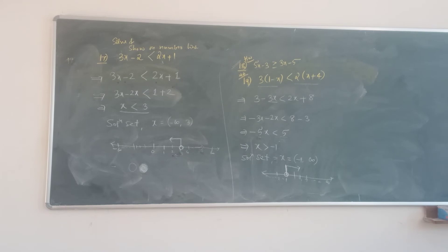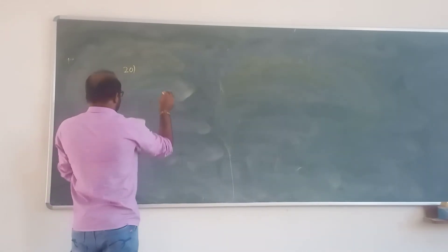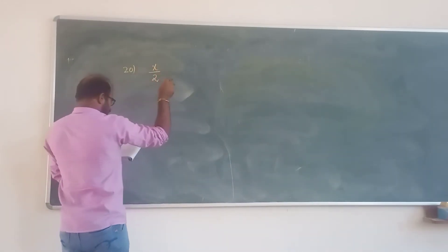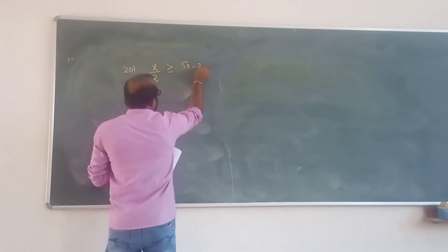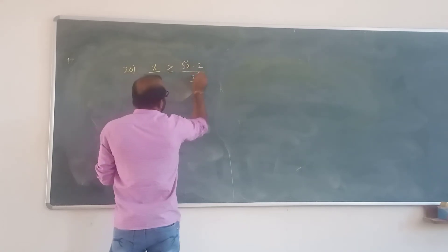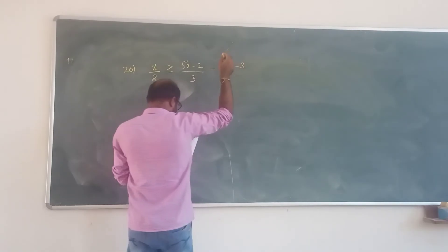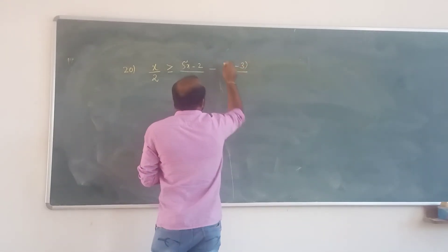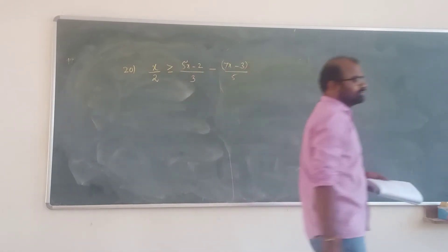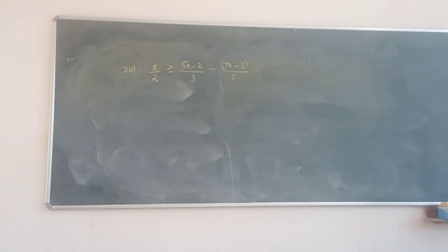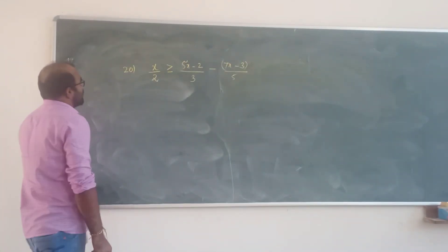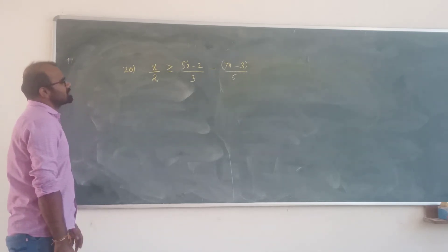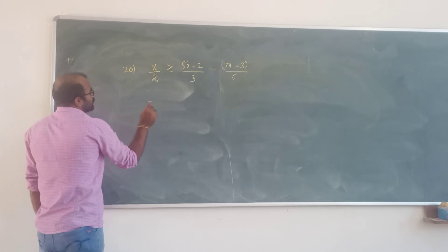Including tanda is not right — then excluding tanda. Then looking at the right side. x by 2 greater or equal to 5 — x minus 2 by 3 minus 7x minus 3 by 5. You have to solve it and show it on the number line.